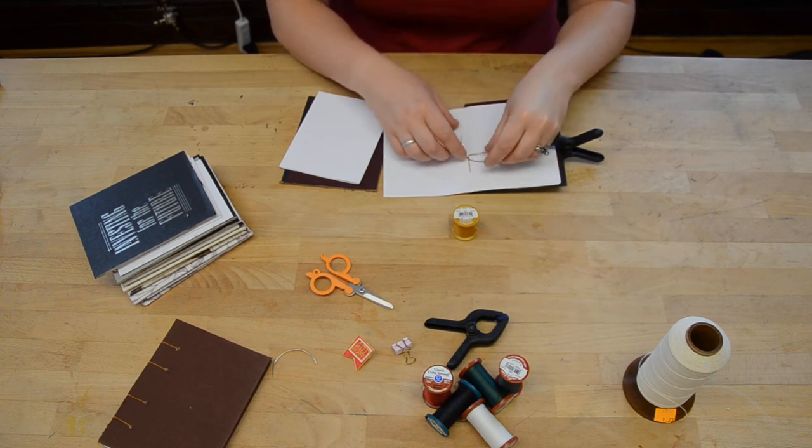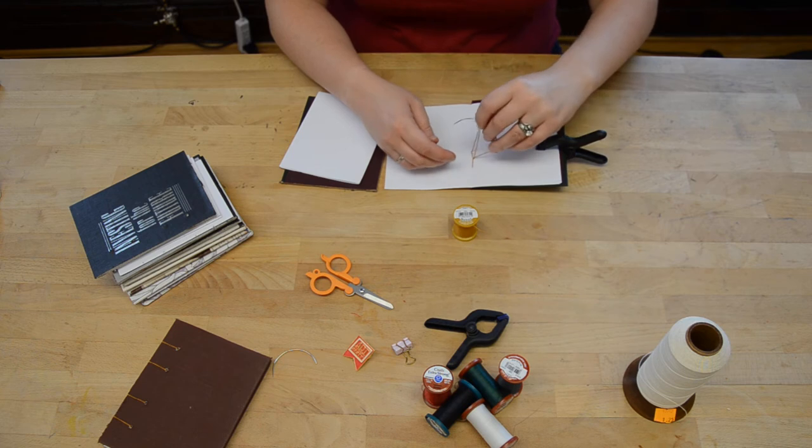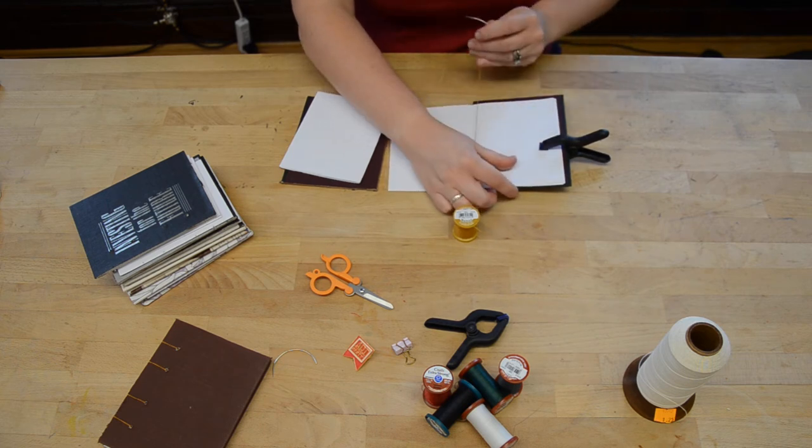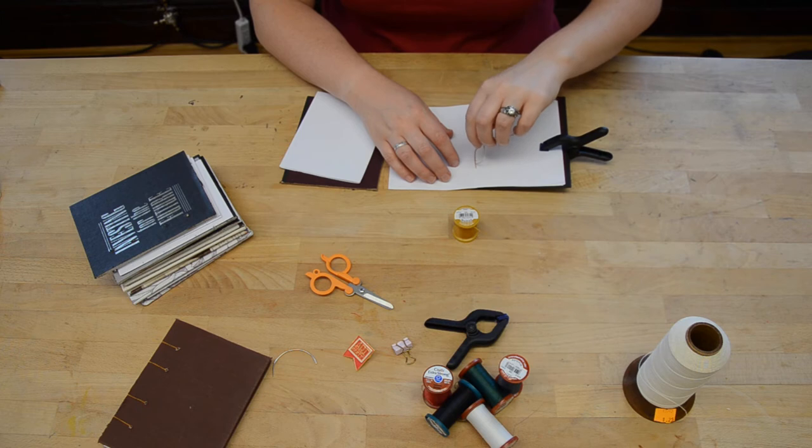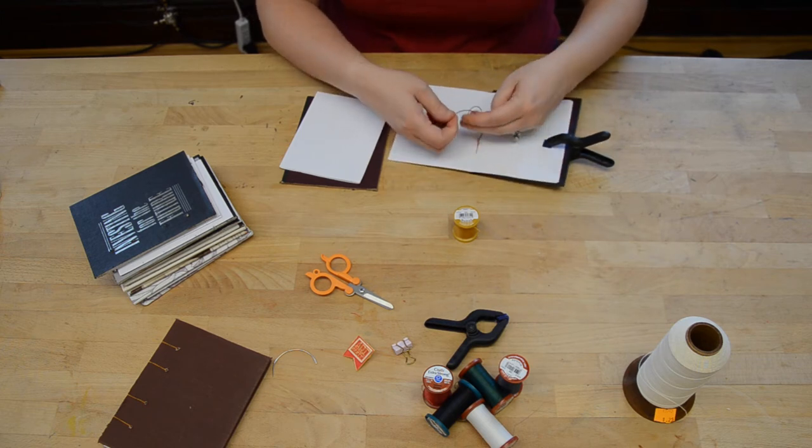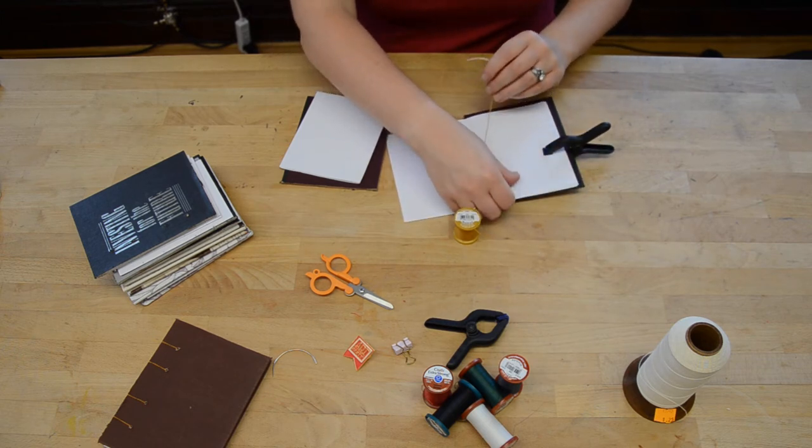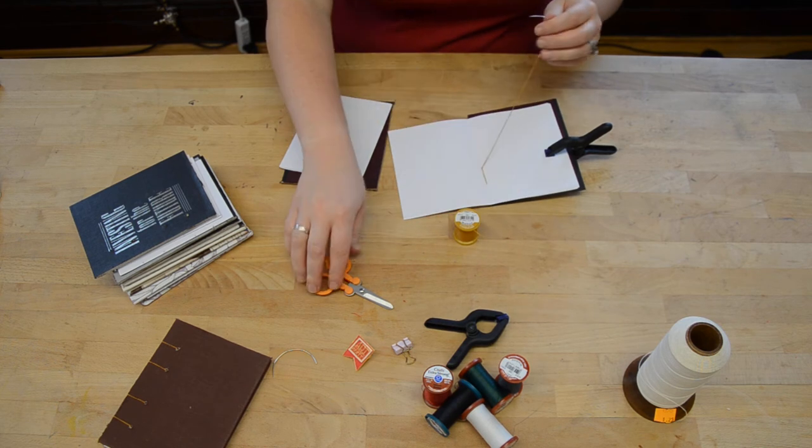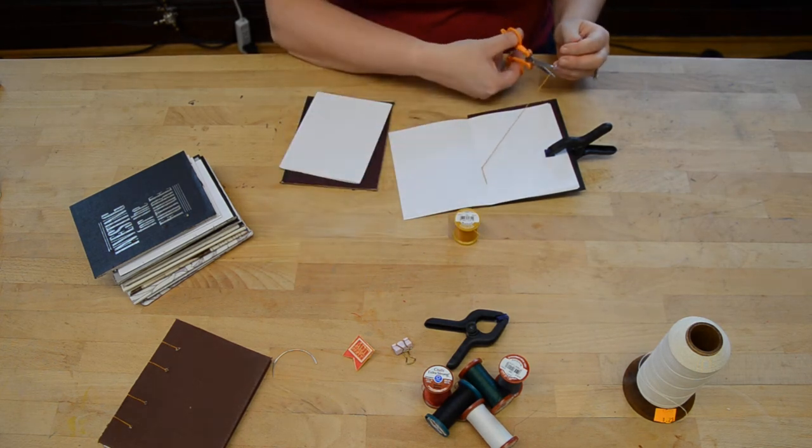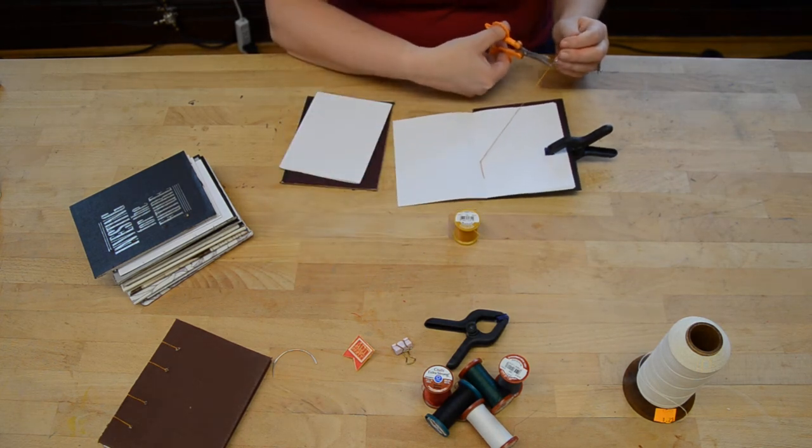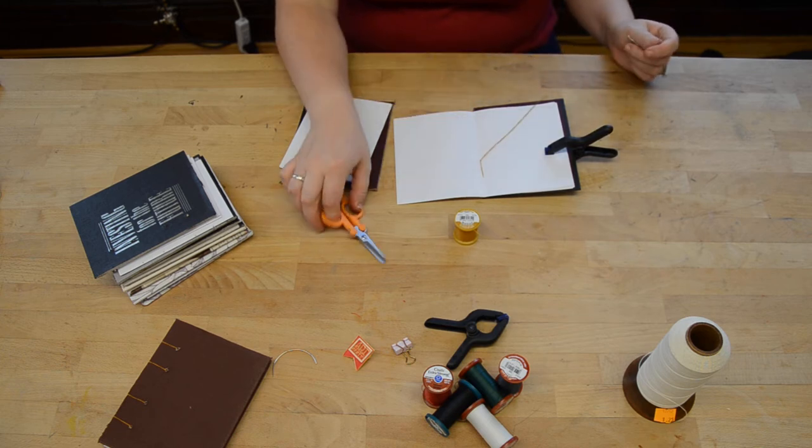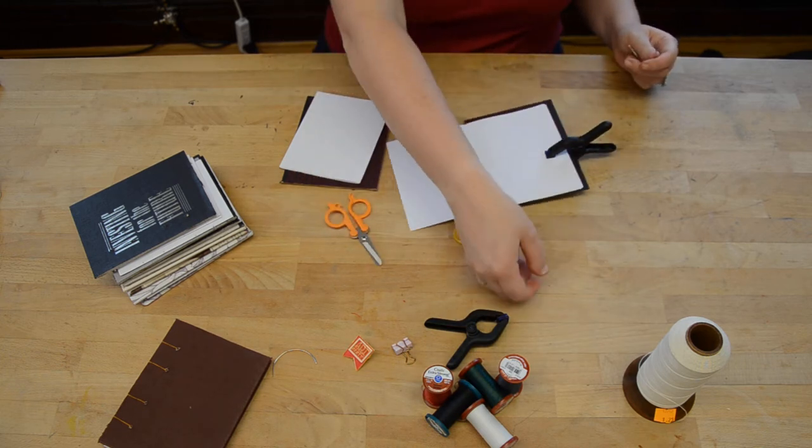So we're going to go under and tie just a simple knot, and I sometimes like to be excessively thorough and double knot it if I know I'm going to cut it off. So there it is. Cut it close to the needle so that you have some wiggle room if you need to tie things off in a funny way.